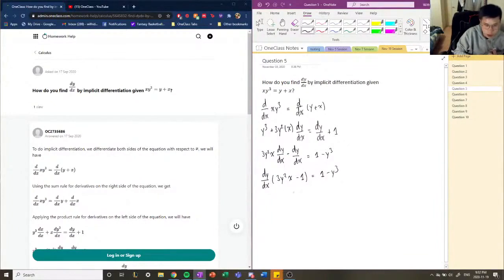And finally, we're going to move this whole term to the other side, so dy over dx equals 1 minus y cubed divided by 3y squared x minus 1.